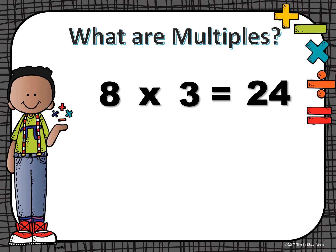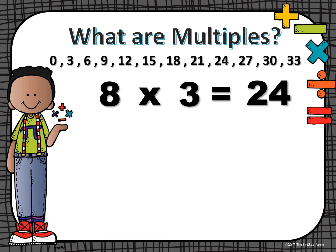Multiples are a skip counting pattern of a specific amount. For example, if I were going to skip count or look at my multiples of 3, it would go 0, 3, 6, 9, 12, 15, 18, 21, 24, 27, 30, 33, and we could continue on and on. So what this tells us is that our multiples are our products of our multiplication facts for 3.